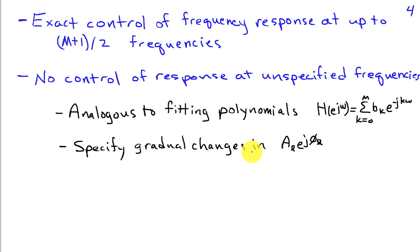The behavior in between the frequency points that we specify is going to be like that of a polynomial. Depending on how those constraints are specified, we can get different types of behavior in between. The best results, recognizing that polynomials are generally smooth, is to specify gradual changes in the desired response of our filter. If that changes slowly from frequency to frequency, then it's more likely that the polynomial will do a good job of fitting in between the points as well.